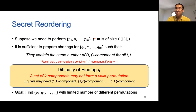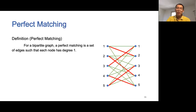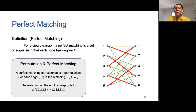We note that this problem is closely related to graph theory. A bipartite graph is one where we can divide the nodes into two sides such that all edges connect nodes from the first side to the second side. For a bipartite graph, a perfect matching is a set of edges such that each node has degree one. Note that a perfect matching corresponds to a permutation: for each edge connecting node i on the left to node j on the right, the corresponding permutation maps value i to value j. For example, the perfect matching in red corresponds to the permutation that maps (1,2,3,4,5) to (2,4,1,5,3).